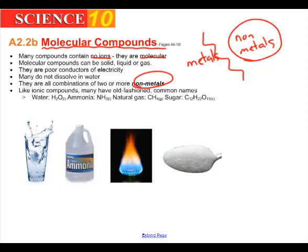As in ionic compounds, many of these have old-fashioned common names and you should get to know some of these. Many kids are familiar with water is H2O, ammonia is NH3, natural gas CH4 also known as methane, and sugar C12H22O11. So here's some common names you're going to run into from time to time.